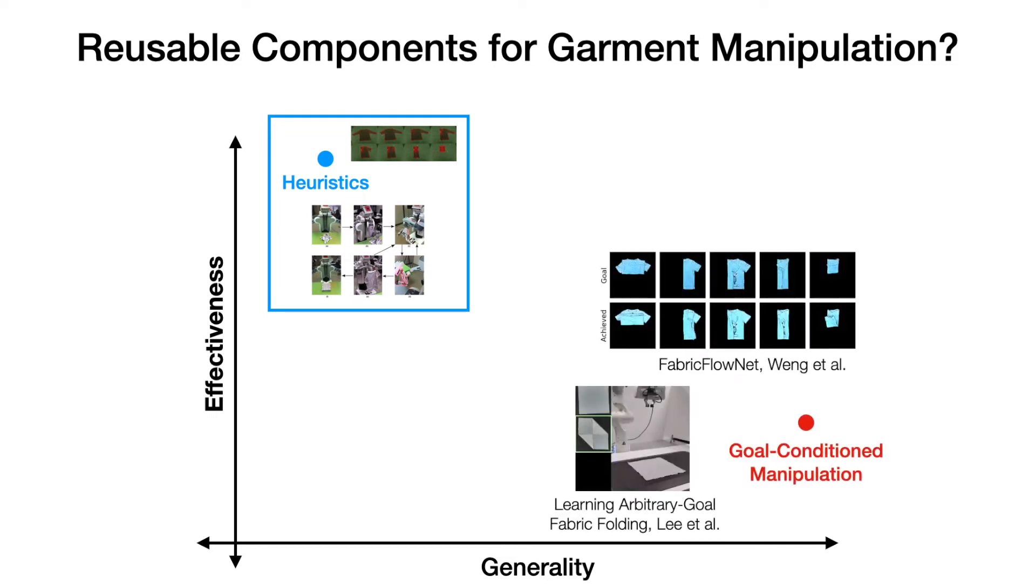On the other end, we have goal condition manipulation, which is an extremely general formulation, but because these methods are so general, they have only been shown to work on simple cloth instances and constrained tasks.